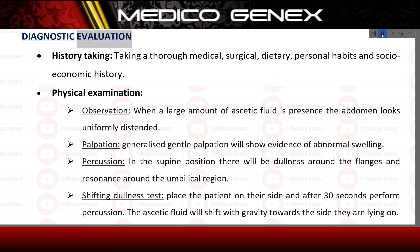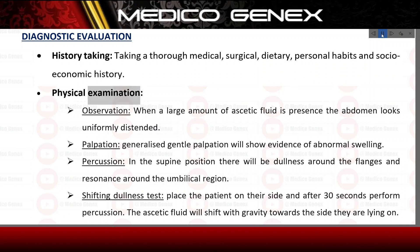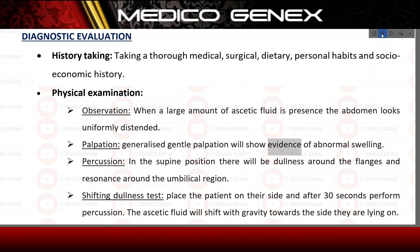Diagnostic Evaluation. History taking involves taking a thorough medical, surgical, dietary, personal habits, and socioeconomic history. Physical examination includes observation — when a large amount of ascitic fluid is present, the abdomen looks uniformly distended; palpation — generalized gentle palpation shows evidence of abnormal swelling; and percussion — in the supine position there will be dullness around the flanks and resonance around the umbilical region.